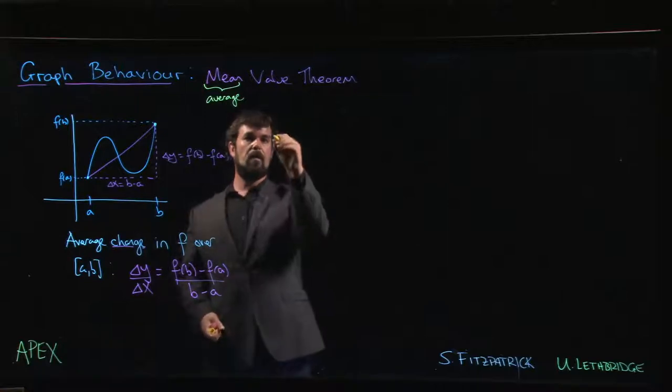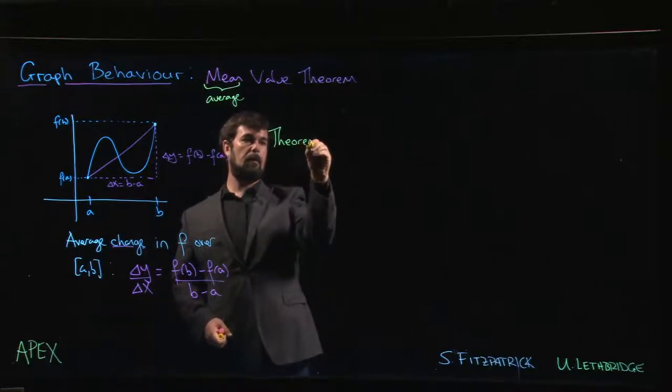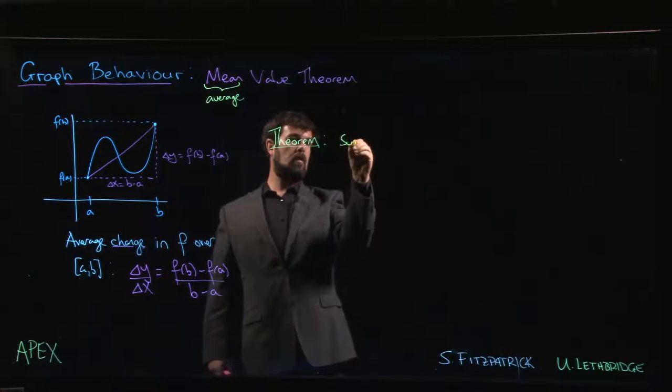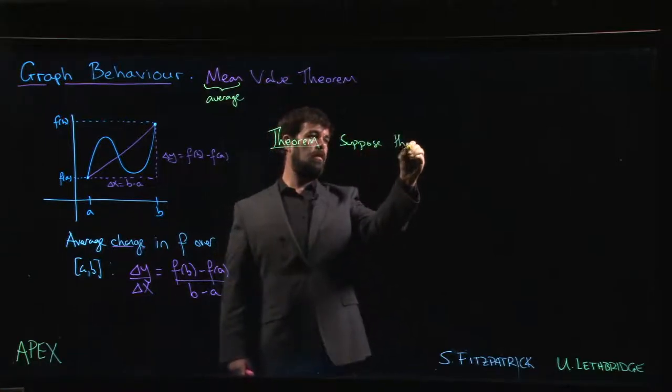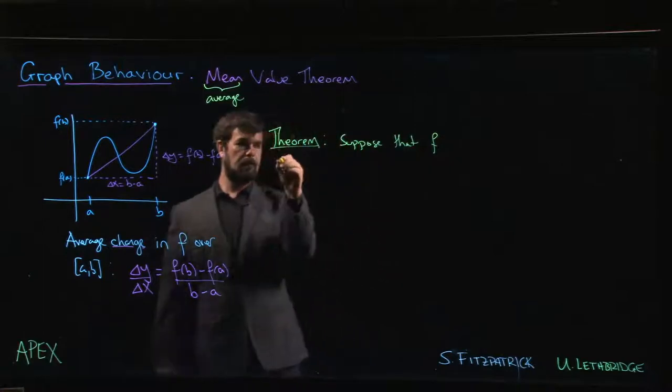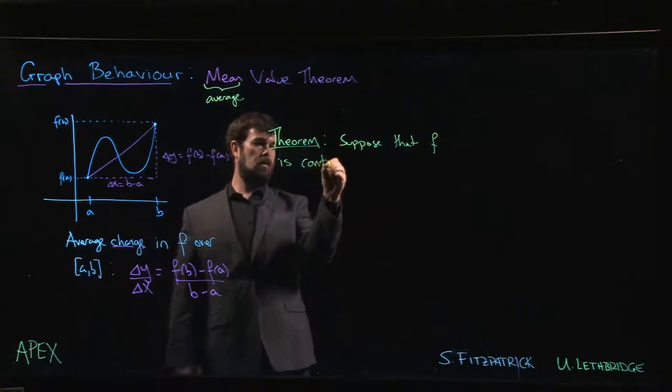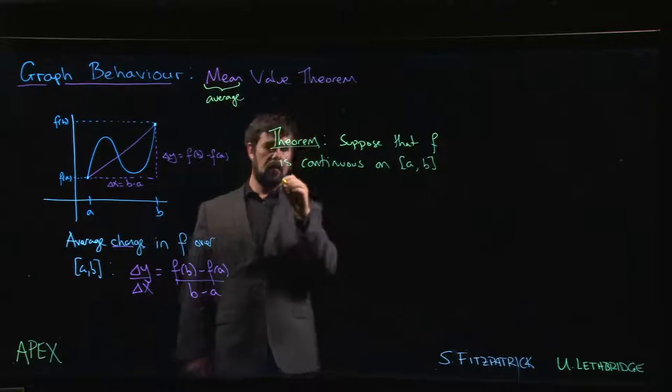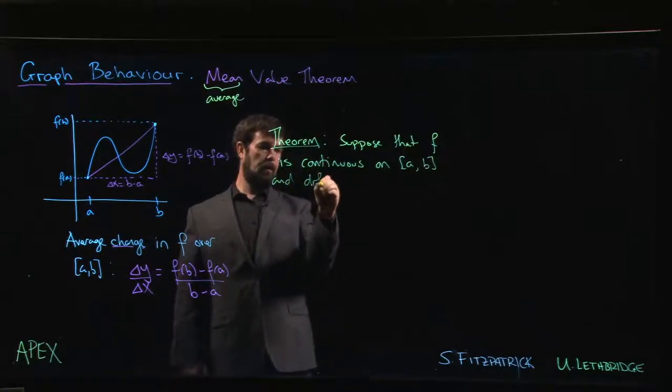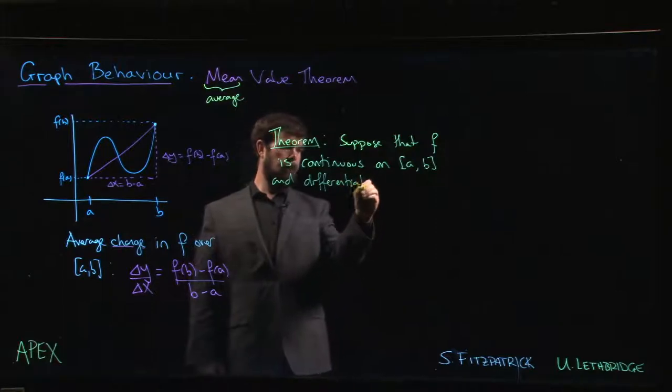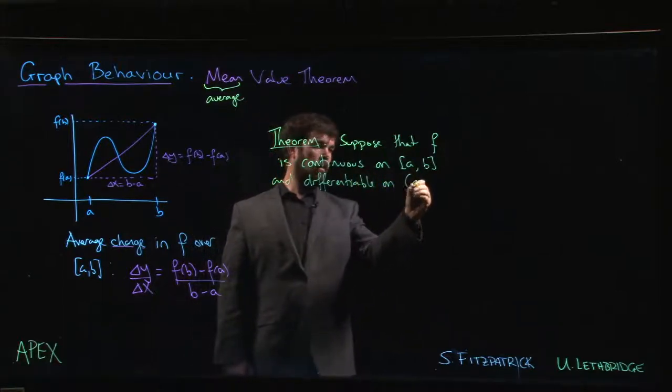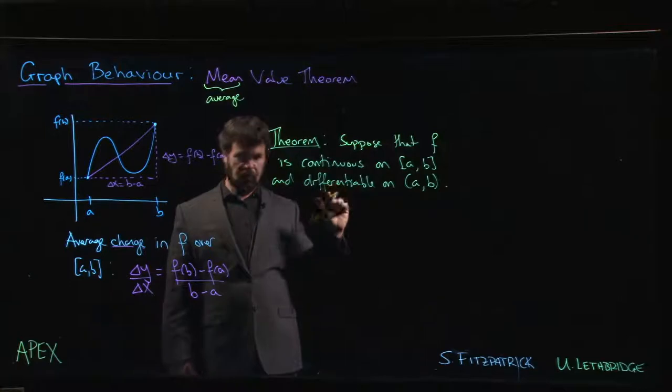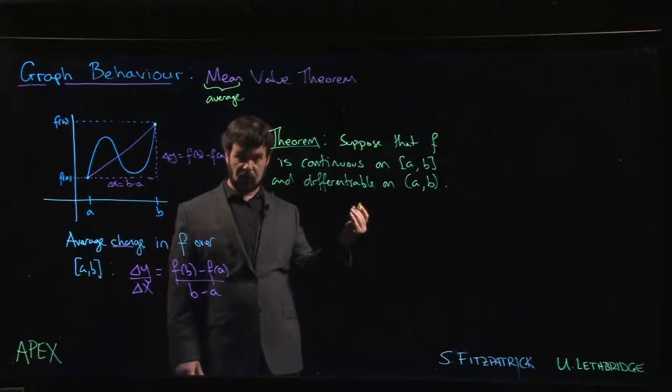The statement of the theorem is as follows: Suppose that we have a function f and it's continuous on a closed interval from a to b, and it's differentiable on the corresponding open interval from a to b. Under these conditions, which are our typical conditions for the types of functions we usually deal with...